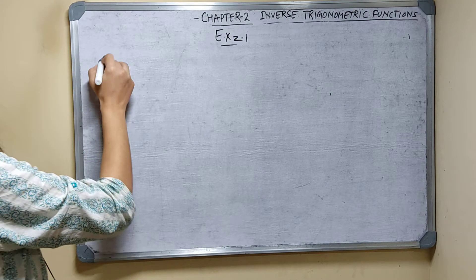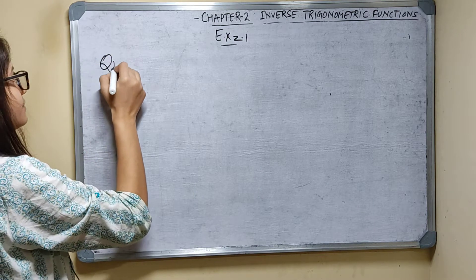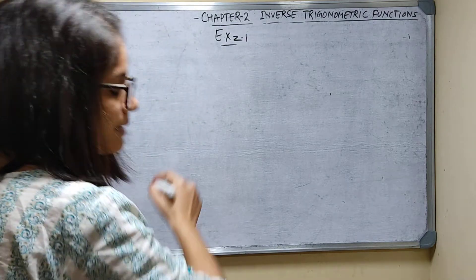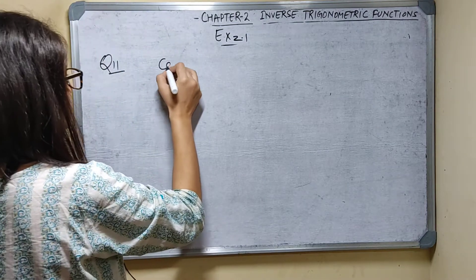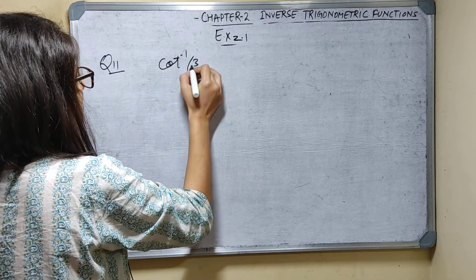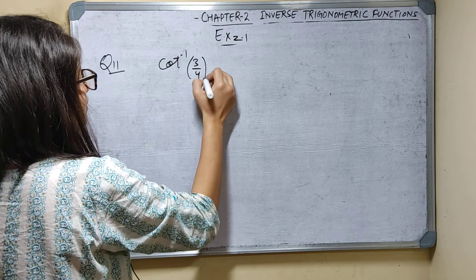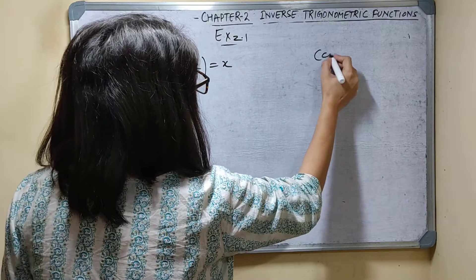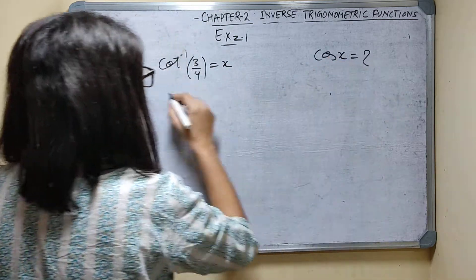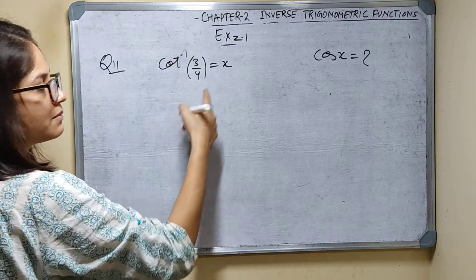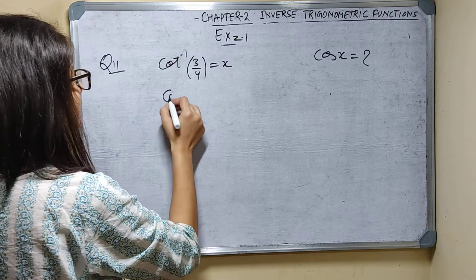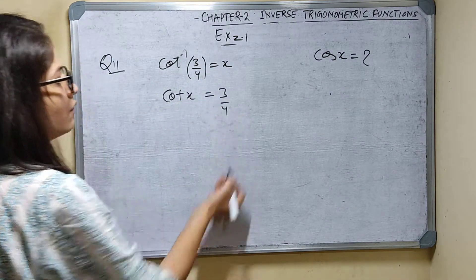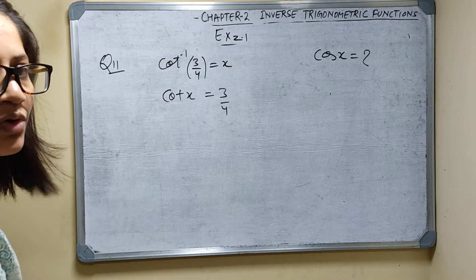Question number 11. It is given: if cot inverse 3 by 4 is equal to x, then find the value of cos x. Since cot inverse 3 by 4 equals x, I can say cot x is equal to 3 by 4.